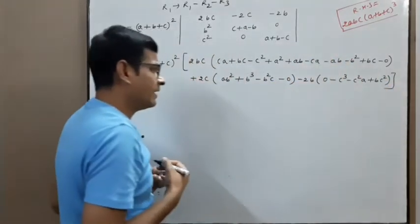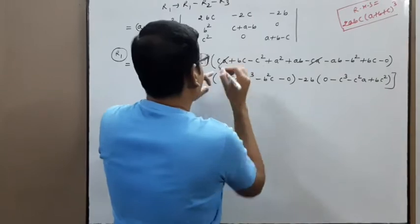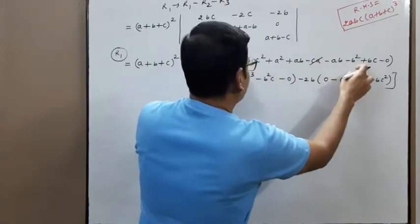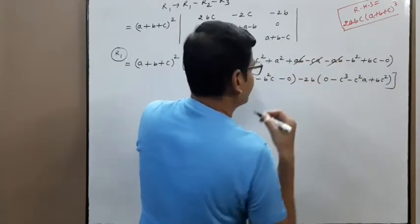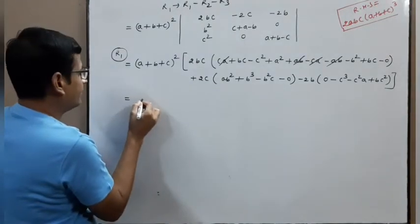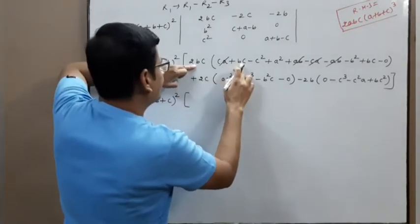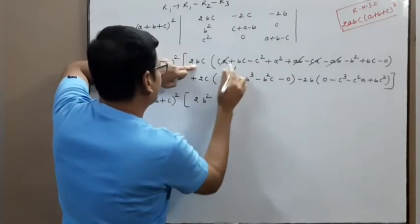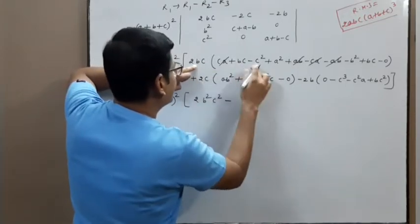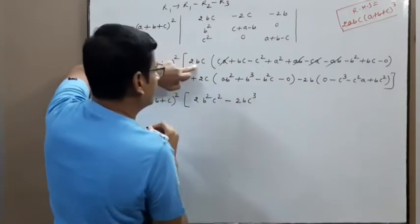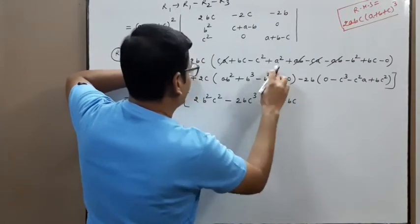Bracket close, big bracket close. Now simplify. ca and ca cancel. bc and bc: 2bc. a² — no. ab and ab cancel. Next step: (a+b+c)² times 2bc·bc = 2b²c². Now plus c² minus 2bc·bc = 2b²c².